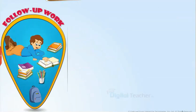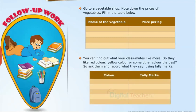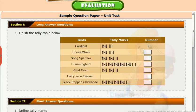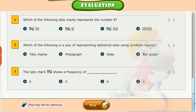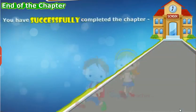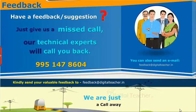Follow-up work: Go to a vegetable shop, note down the prices of vegetables, and fill in the table below. You can also find out what your classmates like more — do they like red color, yellow color, or some other color the best? Ask them and record what they say using tally marks. Evaluation: Test your understanding of the chapter by taking the mock unit test. You have successfully completed the chapter Data Handling.